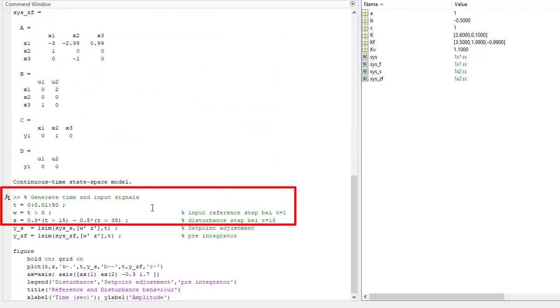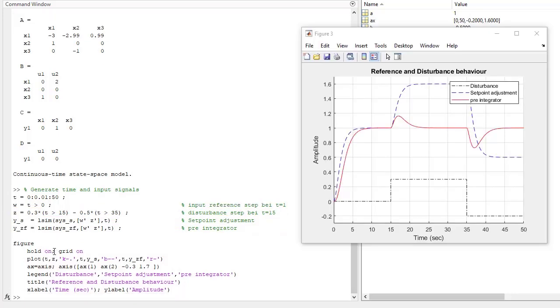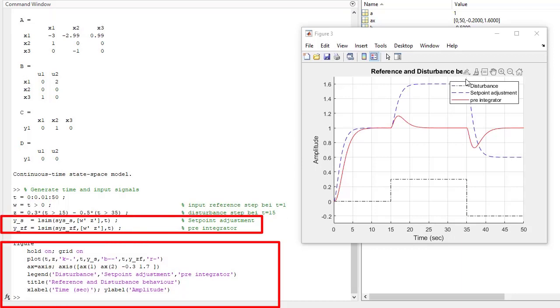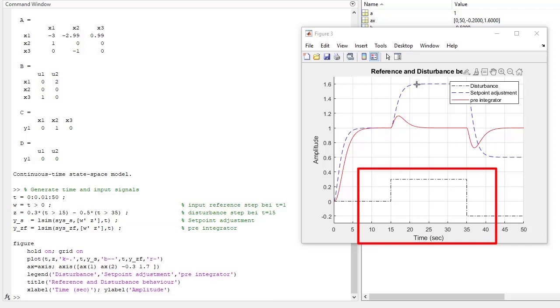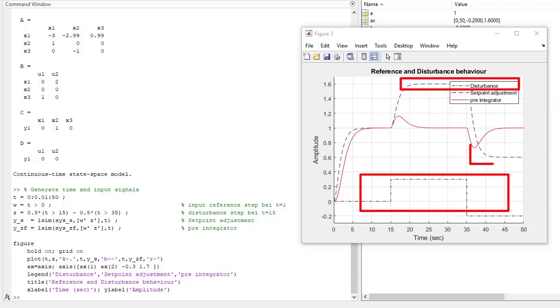Now, generate time and input signals to simulate these systems. The setpoint is a step function at 0 seconds. The disturbance should now take effect after 15 and after 35 seconds. And we can plot the reference and disturbance behavior. Here, this will be the disturbance, and we see here with the blue step response, by using the state controller with setpoint adjustment, that since the feedback is proportional with k, a disturbance cannot be compensated.